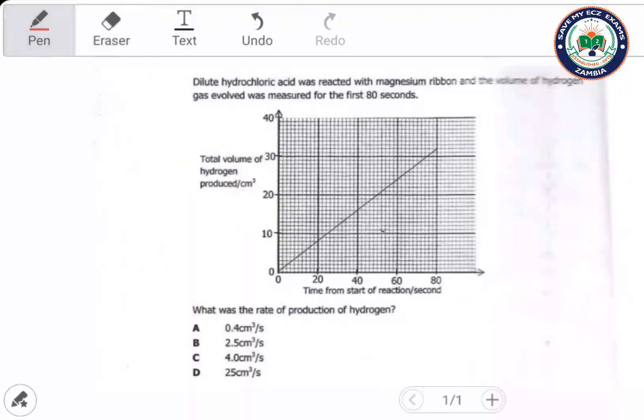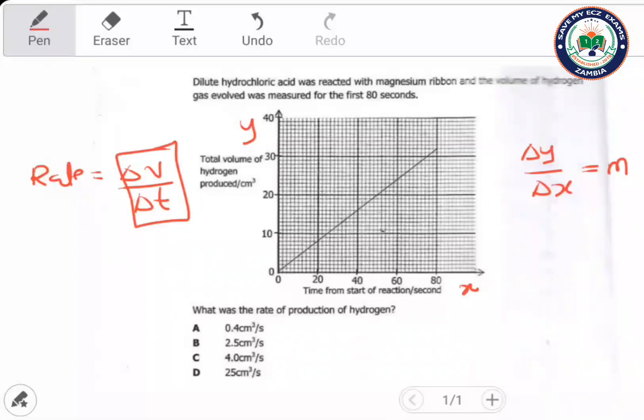How do you find the rate of production? The rate is equal to the change in volume over change in time. Now we know that this is just gradient, because the change of volume is on the y-axis, the change of time is on the x-axis. When we say change in y over change in x, we mean gradient. So we can just find the gradient and we'll be fine.